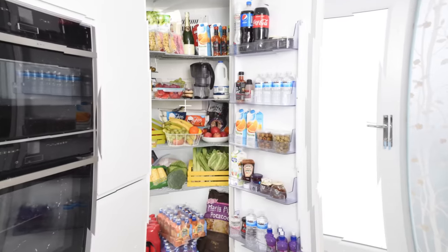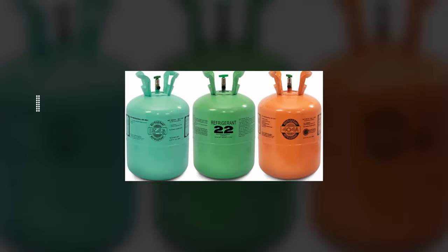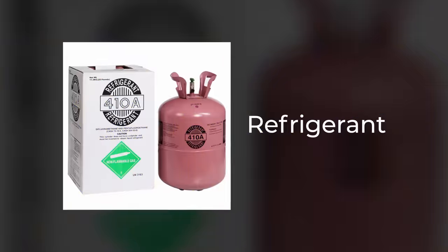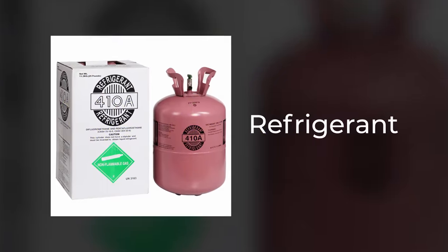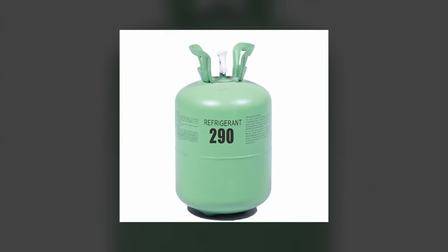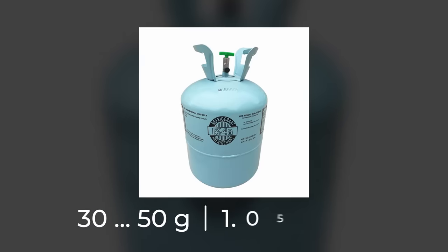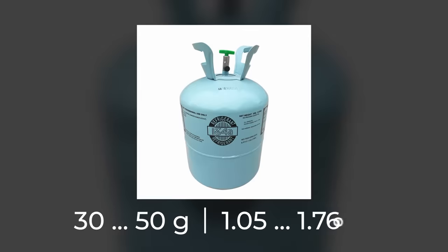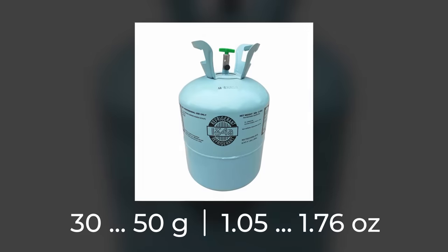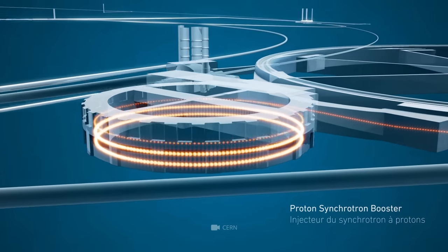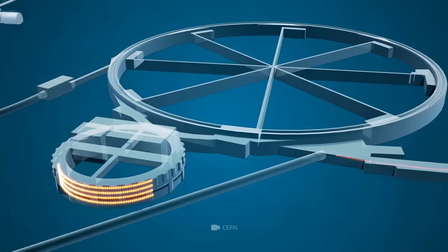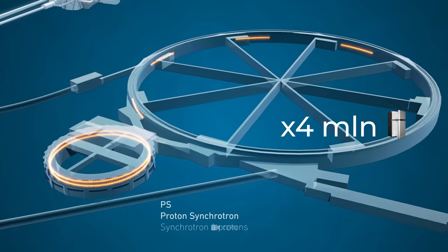Now, look at the refrigerator in your home. In it, there are special substances, refrigerants, that create cold. Liquid helium is one of them. In one household refrigerator, there are approximately 30 to 50 grams, or 1.05 to 1.76 ounces, of refrigerants. So, we can say that the LHC surpasses this indicator by approximately 4 million refrigerators.